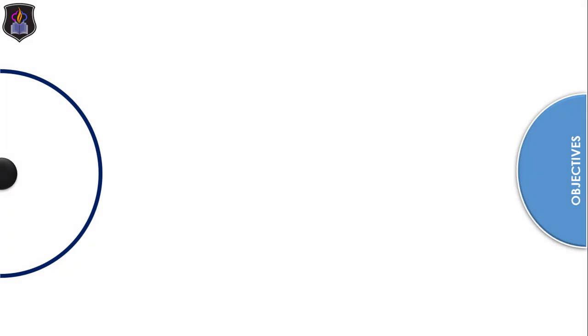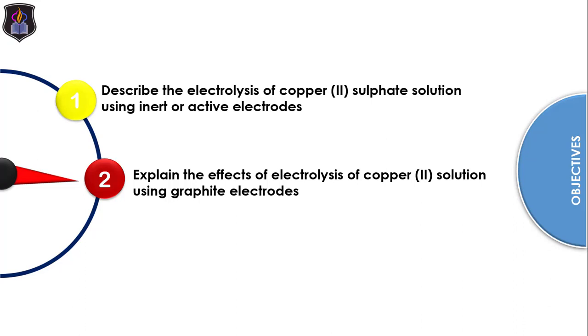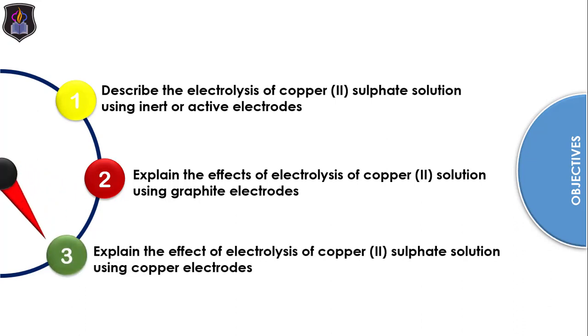By the end of this lesson, you should be able to describe the electrolysis of copper(II) sulfate solution using inert or active electrodes, explain the effect of electrolysis of copper(II) solution using graphite electrodes, and finally, explain the effect of electrolysis of copper(II) solution using copper electrodes.